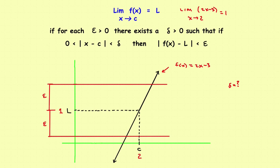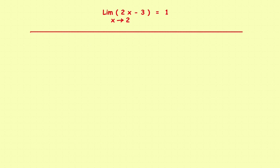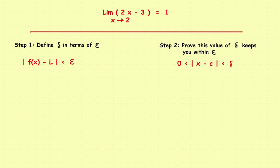To prove this limit exists using the limit definition, there are two steps. Step one: you've picked an epsilon, so now define delta in terms of epsilon using this definition — I'd suggest plugging in the things you know first. Step two: prove that this value of delta keeps you within epsilon on the y-side.